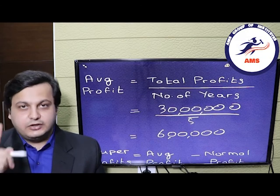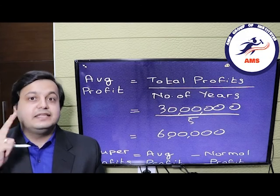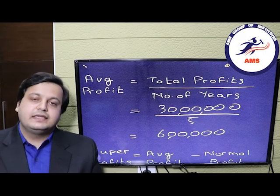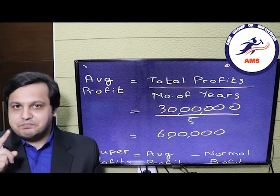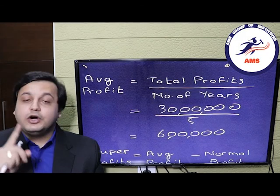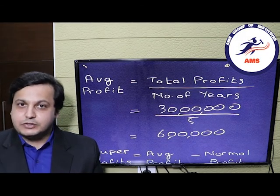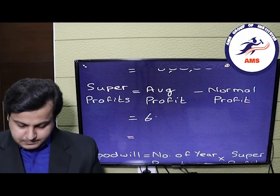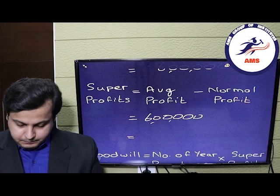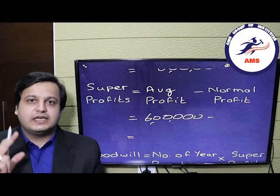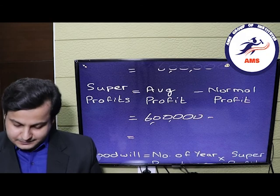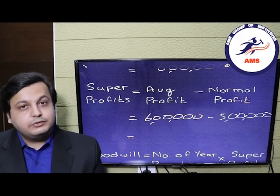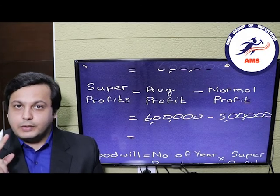Now we have calculated both the normal profit and the average profit of our company. To calculate the super profits: average profits minus normal profits = 6 lakh rupees − 5 lakh rupees = 1 lakh rupee. The super profits come out to rupees 1 lakh.